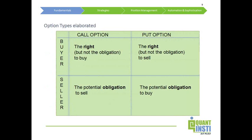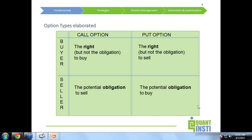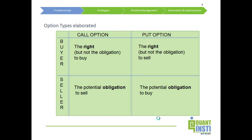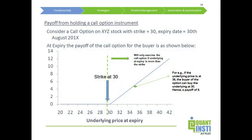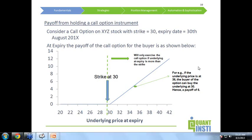To reiterate the different types: in a call option, the buyer has the right to buy but not the obligation. If the buyer invokes that right, the seller has the obligation to sell. Likewise, in case of a put, the buyer has the right to sell, and if the buyer invokes that right, the seller has the obligation to buy. Before we go further, we need to understand how the financial payoff looks from different types of options.